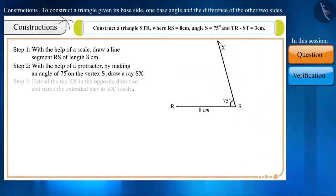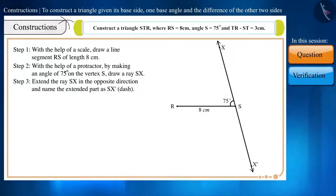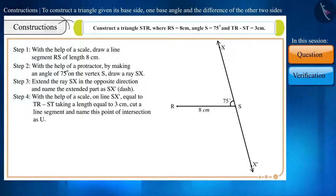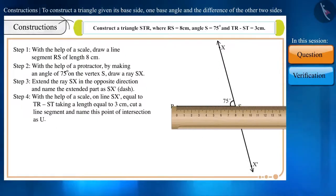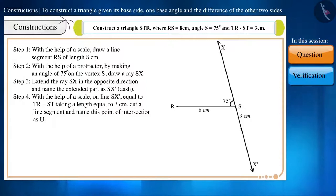Step 3: Extend the ray SX in the opposite direction and name the extended part as SX dash. Step 4: With the help of a scale, on line SX dash equal to TR minus ST, taking a length equal to 3 cm, cut a line segment and name this point of intersection as U.